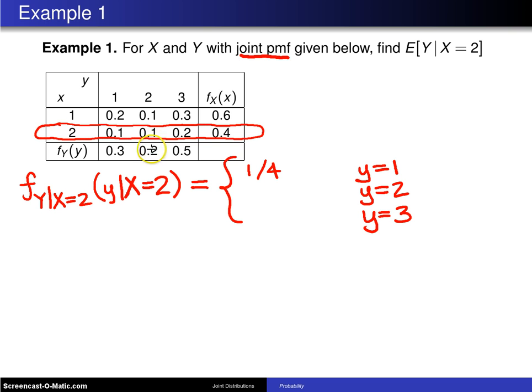And for y equals 2, you will get 0.1 divided by 0.4, which is also 1 fourth. And then for y equals 3, you will get 0.2 divided by 0.4, which is 1 half. These three values sum to 1, so we have a legitimate probability mass function.